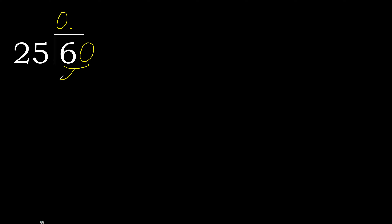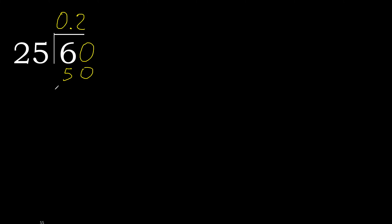60 is not less, therefore work with 60. 25 multiplied by which number is nearest to 60 but not greater? 25 multiplied by 3 is 75, which is greater. 25 multiplied by 2 is 50, which is not greater.